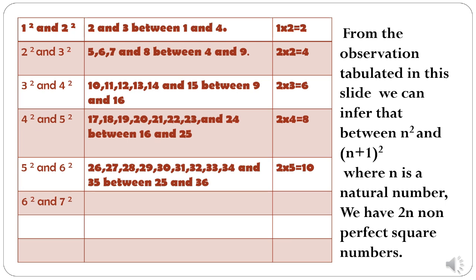If you properly see the above facts, you will come to know that between 2 consecutive square numbers, let us say between n square and n plus 1 square, we have 2n non-perfect square numbers.